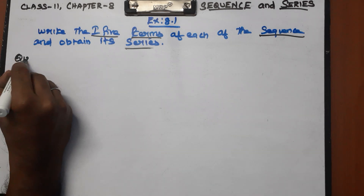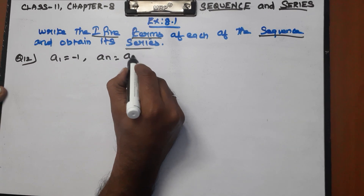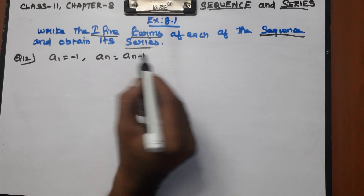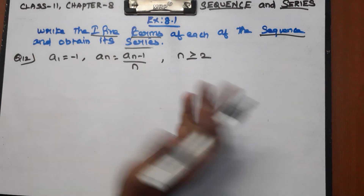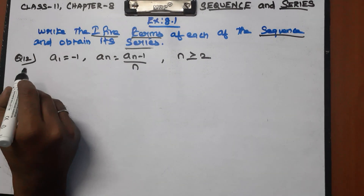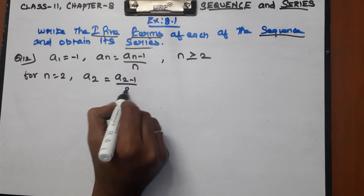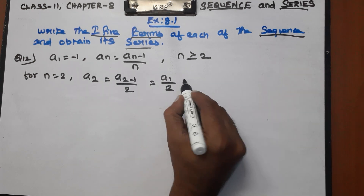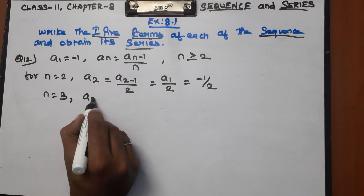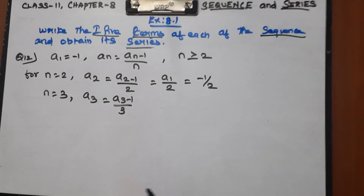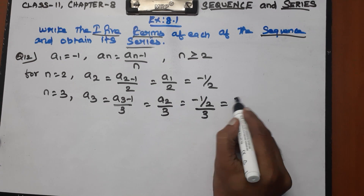Question Number 12. Given: a1 equal to minus 1, and an equal to an-1 divided by n, for n greater than or equal to 2. For n equal to 2: a2 equals a1 divided by 2, equals minus 1 divided by 2. For n equal to 3: a3 equals a2 divided by 3, equals minus 1 by 2, divided by 3, equals minus 1 by 6.